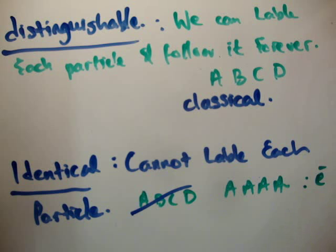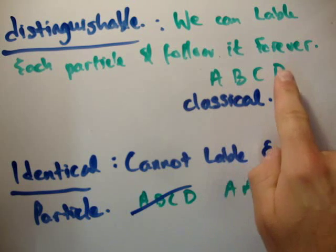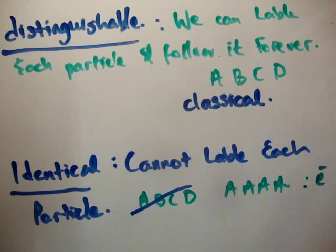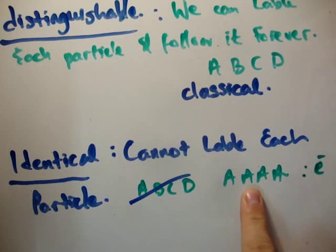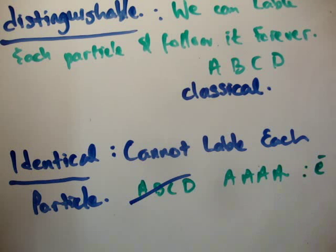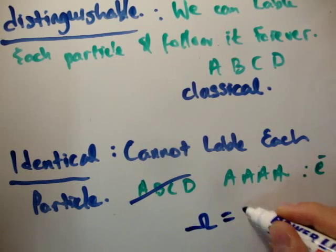The reason we need to know this is if they are distinguishable, then the multiplicity is greater. Because there are more ways of arranging them. Like, we could arrange A, B, C, D. We could arrange it B, A, C, D, or B, A, D, C, or whatever. But in this one, there's only one way of arranging this. If we rearrange four identical particles, we just get the same arrangement no matter what way.